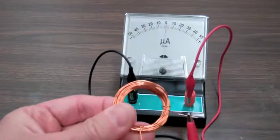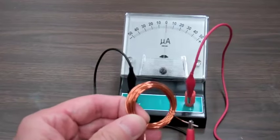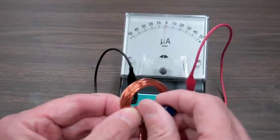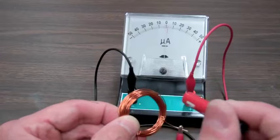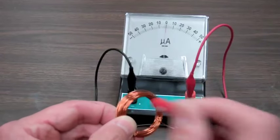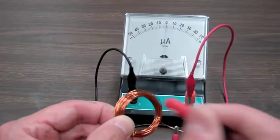So I have one quarter of the number of turns. And so again, if I move the magnet and try to move it as fast as I can, you can see from the deflection I am only getting about a quarter of the current flowing.